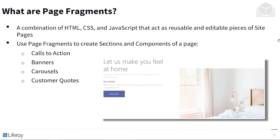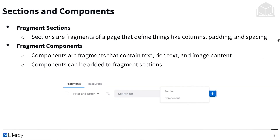These are visual elements of a page that can be interacted with as well. You can use page fragments to create sections and components of a page — this could be anything from calls to action, banners, carousels, customer quotes, and more. In our image, this entire piece shown is a page fragment — something we could place on a page. Not only does it have text and a graphic, but it also has a button we can interact with. Fragments are broken up into two types: sections and components.